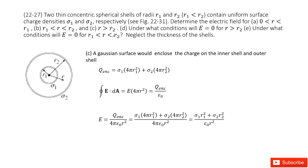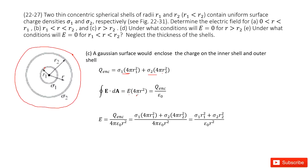The next case is r greater than R2 — outside both shells. We draw a Gaussian surface here. There is enclosed charge from both the inner and outer shells. The inner shell contributes φ1 times 4πR1², and the outer shell contributes φ2 times 4πR2². Applying Gauss's law: E times the Gaussian surface equals total enclosed charge divided by ε₀. Substituting, we get the answer for E in this region.